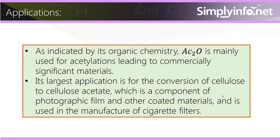As indicated by its organic chemistry, AC2O is mainly used for acetylation leading to commercially significant materials. Its largest application is for the conversion of cellulose to cellulose acetate, which is a component of photographic film and other coated materials, and is used in the manufacture of cigarette filters.